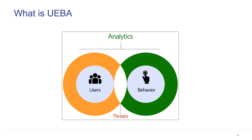The higher the risk score, the more critical it is for us to fix the risk. There are many anomaly algorithms — supervised learning or unsupervised learning machine learning techniques — used to baseline normal activity. This has been proved to be a successful model in detecting notorious insider threat behaviors.